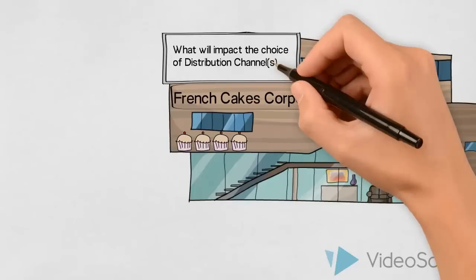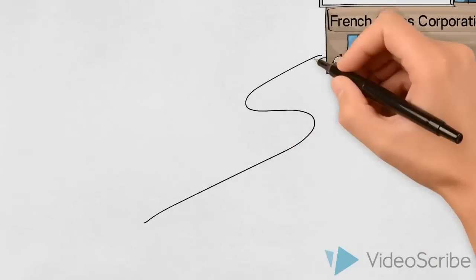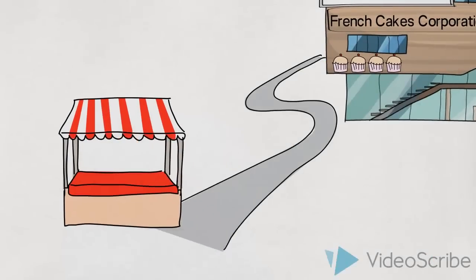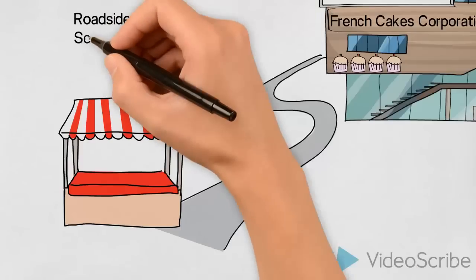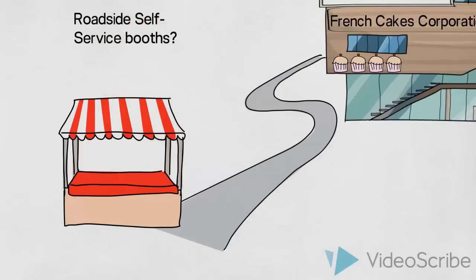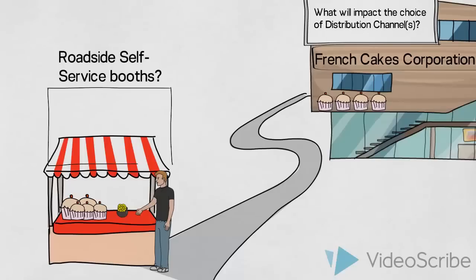Let us imagine that they had the idea of selling their cakes and desserts in rural areas, through roadside self-service booths, where customers were expected to show up and purchase the products without any assistance. In this case, we could argue that they should first of all have considered some market factors.